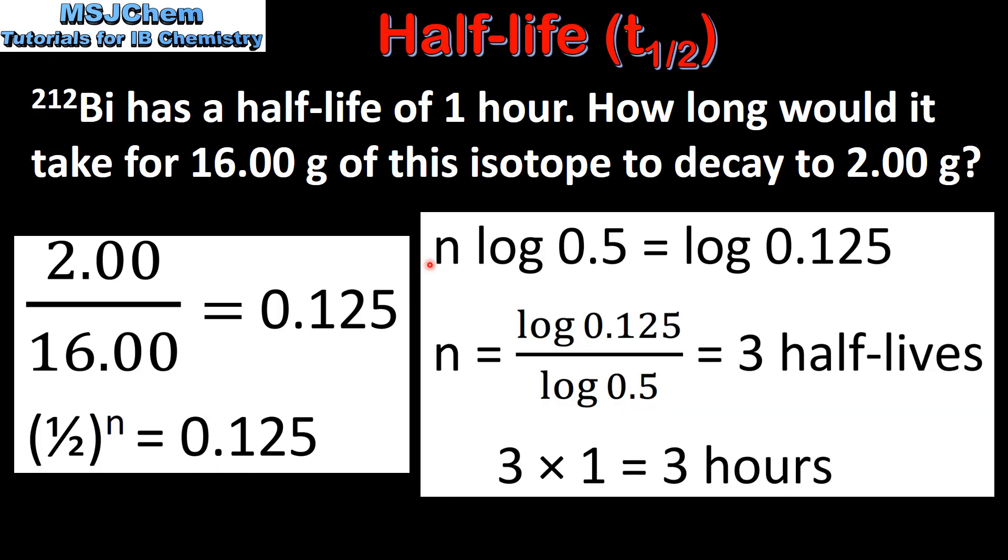To solve this we take the log of both sides and then we solve for n by dividing the log of 0.125 by the log of 0.5 and this gives us 3 half-lives. The half-life of bismuth-212 is 1 hour and 3 half-lives have passed, therefore the answer is 3 hours.